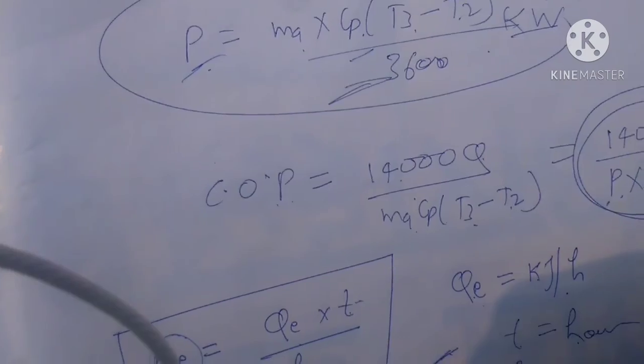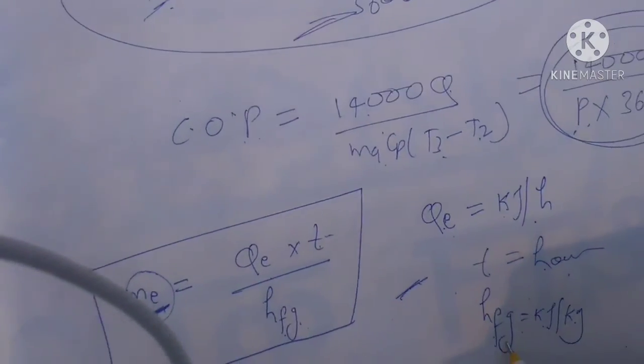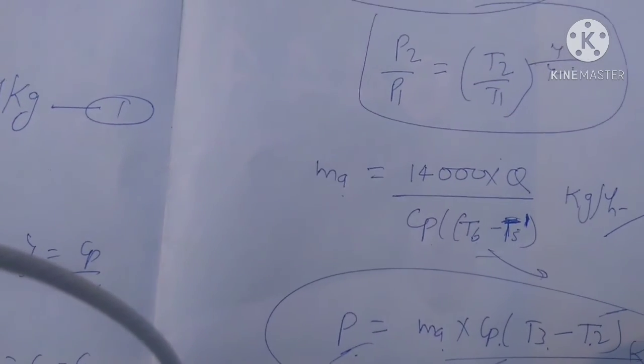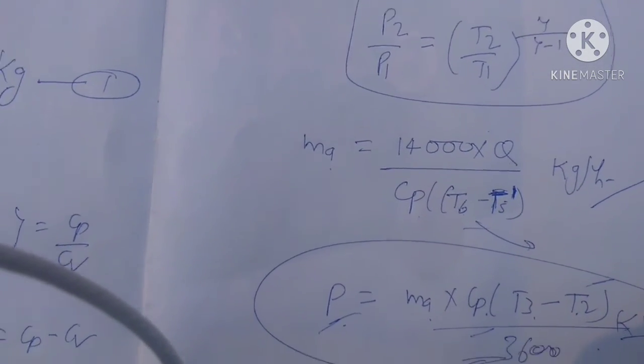QE is heat to be removed in evaporation, t is flight time, and HFG is latent heat of evaporation. This is a normal formula and we will not describe it in detail.